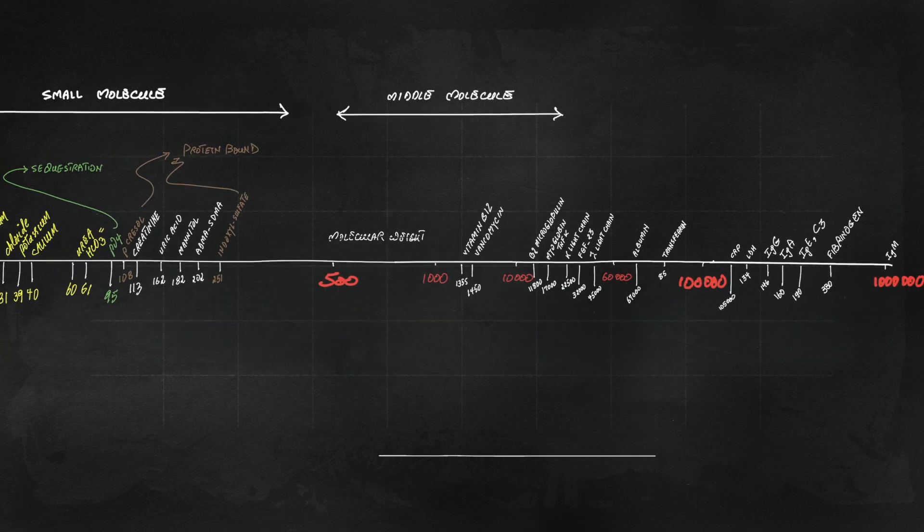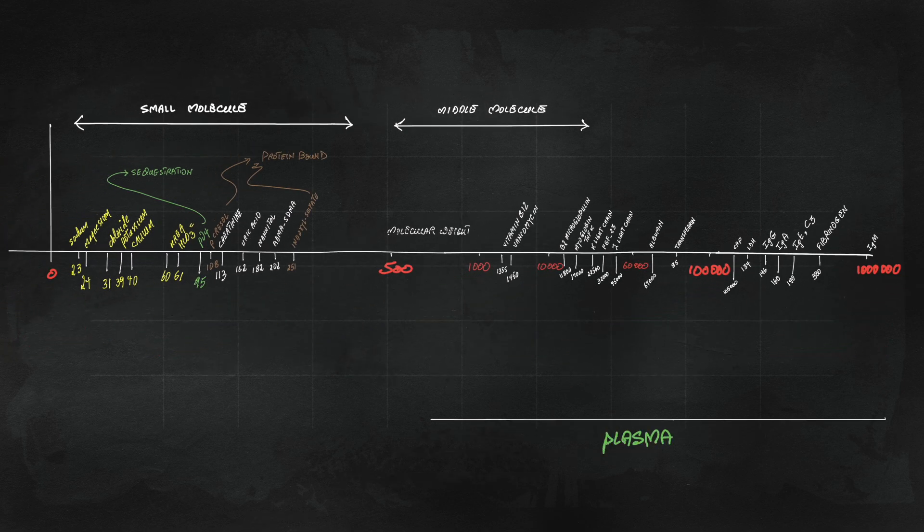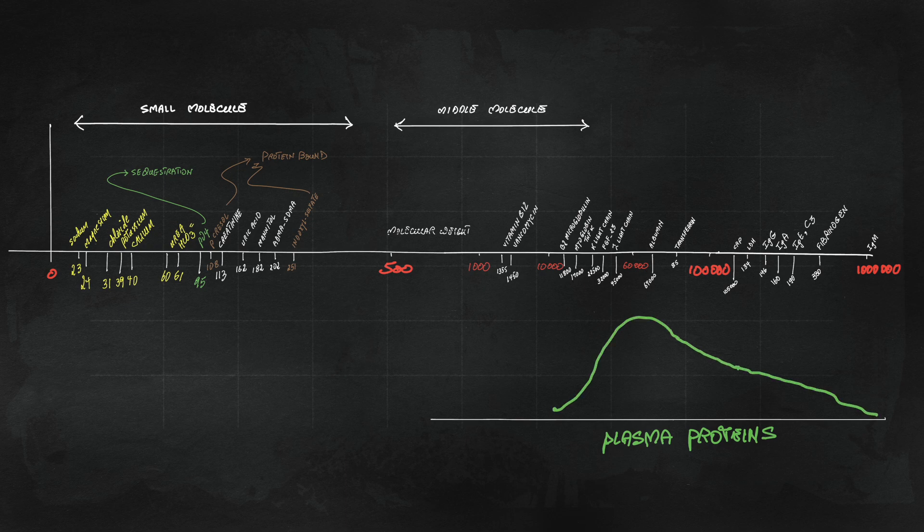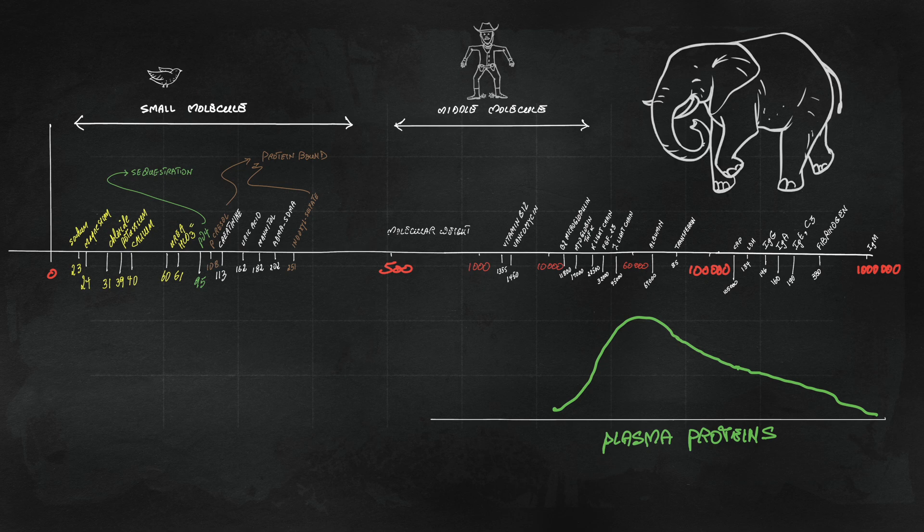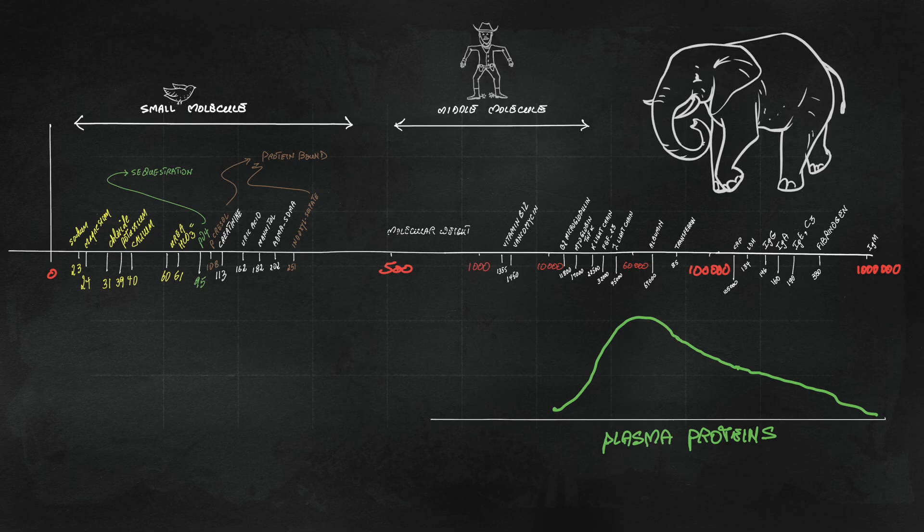If you look at the distribution of proteins in your plasma, they range many of them in that 30-40,000, but they can extend all the way to 1,000 kilodaltons. If you compare small molecules to the size of a pigeon, those proteins are weight-wise comparable to an elephant.